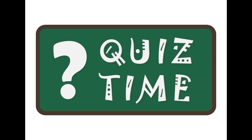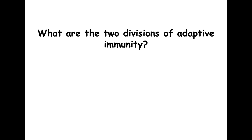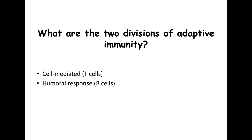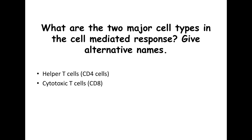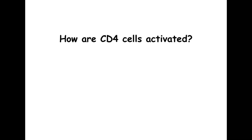Quiz time — let's go through this and see what you recall. What are the two divisions of adaptive immunity? The answer is cell-mediated, which are T cells, and humoral responses, which are B cells. What are the two major cell types in the cell-mediated response? The answer is helper T cells with CD4 receptors, so we also call them CD4 cells; and cytotoxic T cells with CD8 receptors, so we also call them CD8 cells. How are CD4 cells activated? Antigen-presenting cells stimulate the helper T cells through co-stimulation — the APC has MHC receptors that display antigens on the surface, the helper T cell has its own receptors that interact, and the APC sends out chemicals to activate it.